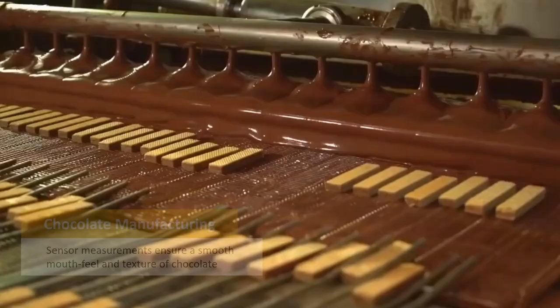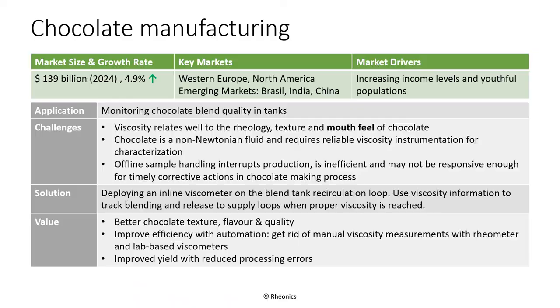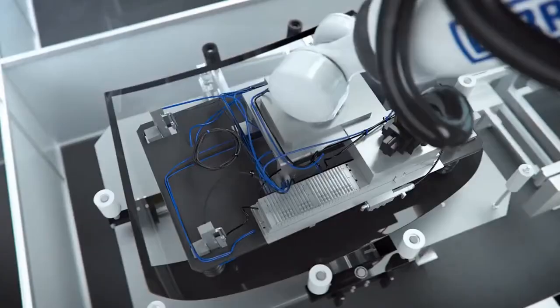Chocolate manufacturing is a promising market for our viscometers. Our sensors ensure smooth mouthfeel and texture even in high-volume production. Our viscometers are finding wide usage across key global players — Europe and North America are currently key markets where core brands are adopting our sensors across their production lines, with newer clients coming on board in Asia and Latin America. Chocolate producers are looking to automate manual viscosity measurements and carry out these measurements inline to achieve a fully continuous production process. Sensors can be integrated in a blend tank recirculation loop, continuously tracking viscosity and ensuring release to supply loops only after correct viscosity is attained — resulting in improved chocolate taste and quality, greater brand loyalty, and improved yield.